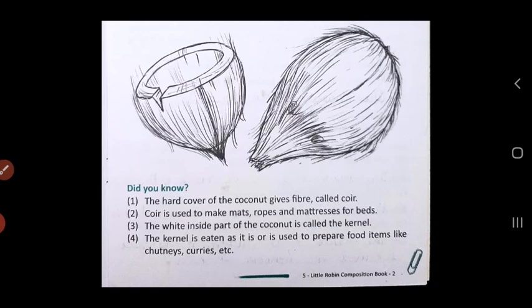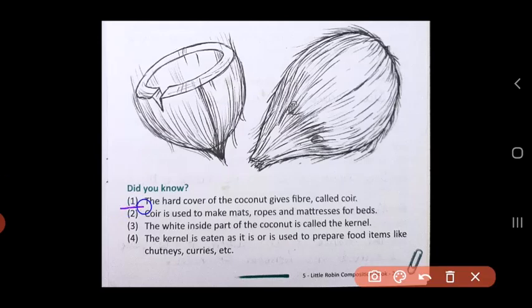Now let us write a small composition on the coconut. You have to write 5 to 6 lines in your own words. So let's put the title the coconut.